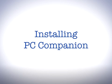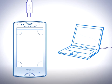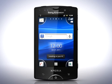The installation of PC Companion is easy. Just attach your phone to the computer with a USB cord. PC Companion software is already preloaded on the memory card that comes with your phone, and the installation message will be shown on the phone display. Press the install button on your phone and the software installation will start on your computer.